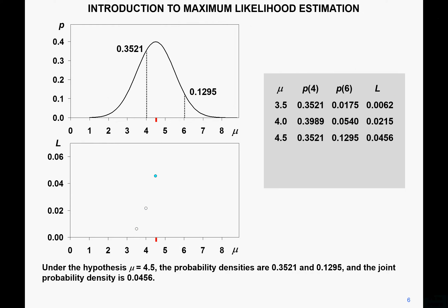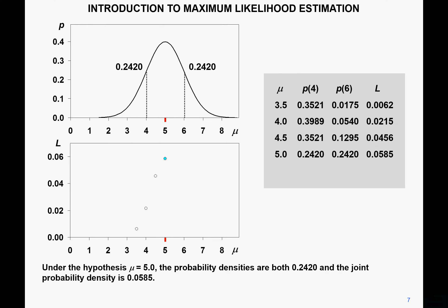Changing the hypothesis to mu equals 4.5, the probability densities are 0.3521 and 0.1295, giving a joint probability density of 0.0456 — still increasing. If we increase mu to 5, the joint probability density continues to increase, because 4 and 6 are symmetric around 5.